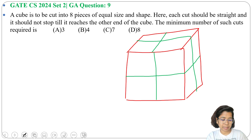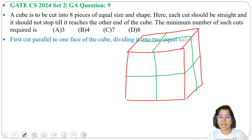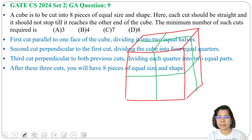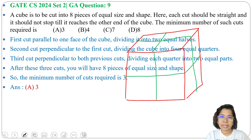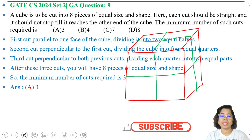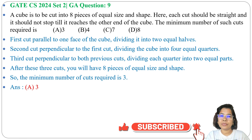The answer is 3. Option A is 3, so the answer is option A. We need to cut 3 times to get 8 pieces of similar size and similar shape of a cube. If this lecture is helpful for you, please like, share, and subscribe. Thank you.